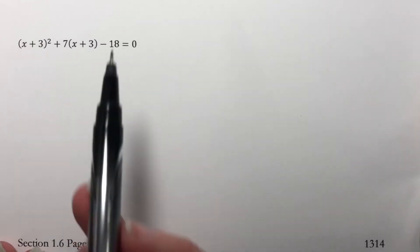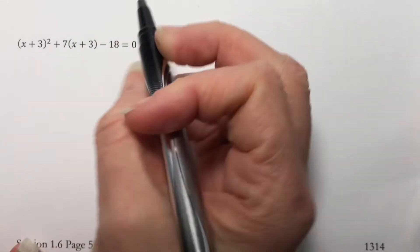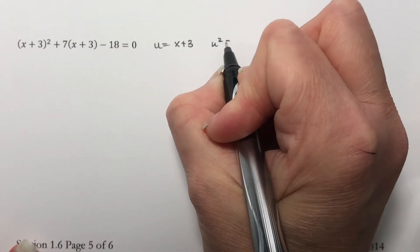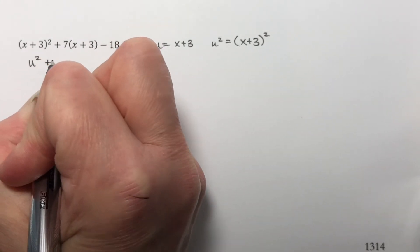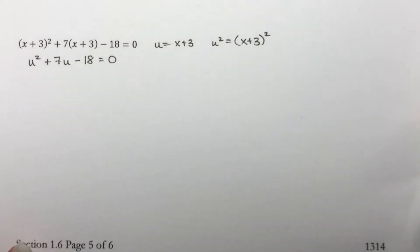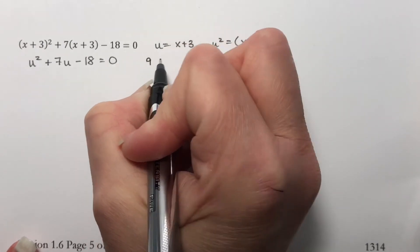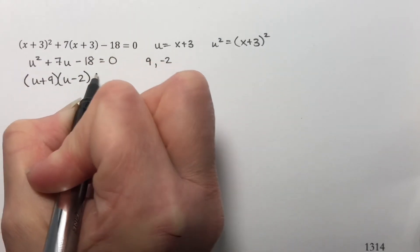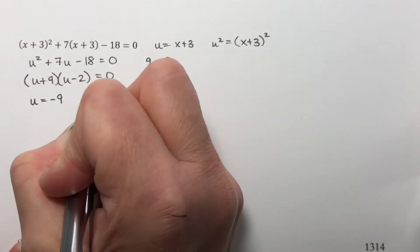Now here I have something that is quadratic in form. I have the same expression in both spots, and this exponent is twice the other. So I'm going to let u equal x plus 3, making the squared term u squared. Making that substitution, I get u squared plus 7u minus 18 equals 0. Two numbers that multiply to negative 18 and add to positive 7 are positive 9 and negative 2. This factors as (u plus 9)(u minus 2) equals 0, giving u equals negative 9 or u equals 2.